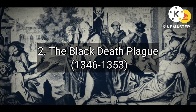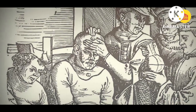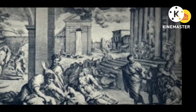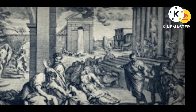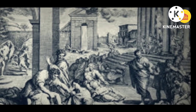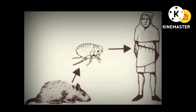Number 2. The Black Death Plague, 1346-1353. The next most deadly disease outbreak is the Black Death Plague. In this disease outbreak, the death toll reached 75 to 200 million people. The cause of this plague is the bubonic plague bacteria, which is spread by infected ticks and possibly body lice.